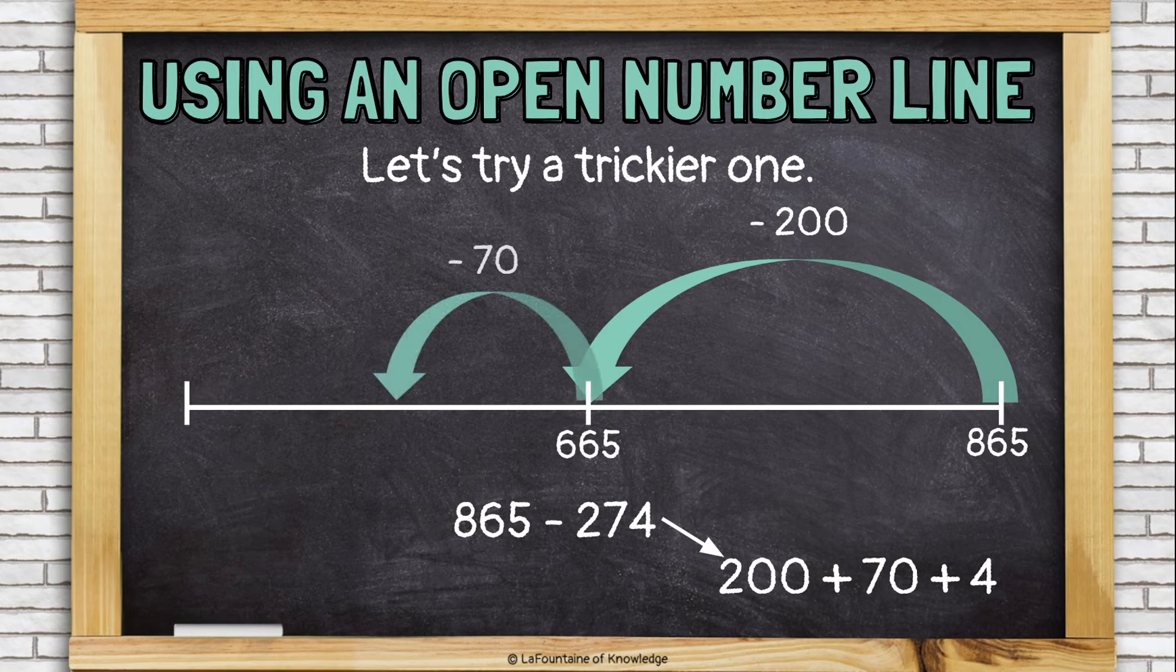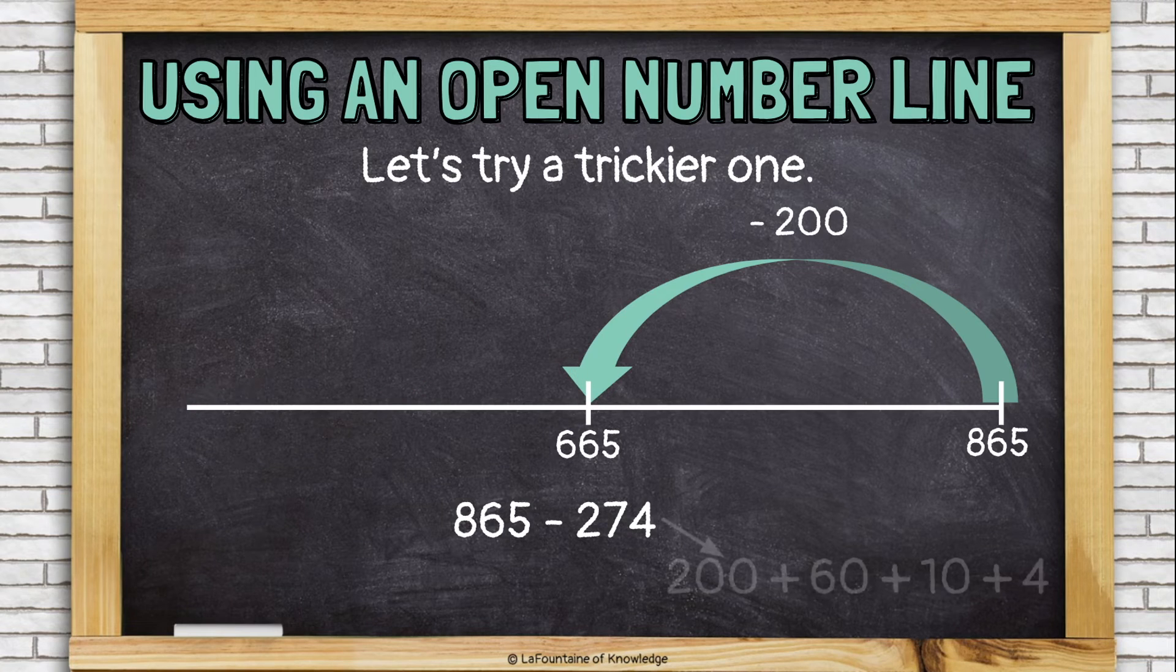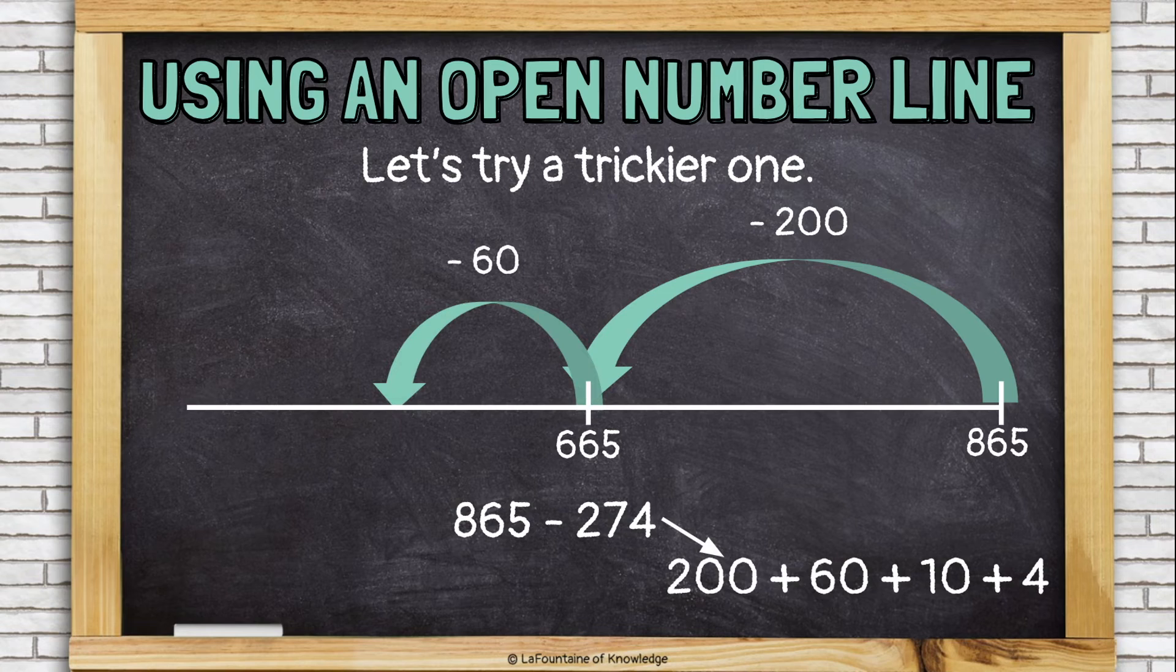Now I'll subtract 70. That's actually pretty tricky. Maybe I'll break my number apart differently. Let's take away 60. That's pretty easy. 665 minus 60 is 605.